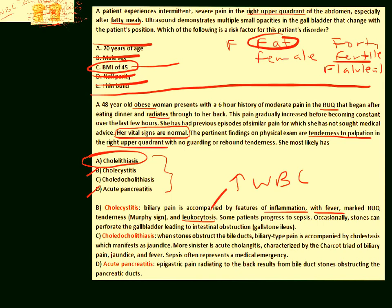To differentiate further: choledocholithiasis — stones in the common bile duct — is often associated with jaundice. Cholangitis involves inflammation of the entire biliary tree and presents with Charcot's triad: right upper quadrant pain, jaundice, and fever. Cholecystitis involves fever and leukocytosis. Pancreatitis is inflammation of the pancreas and more typically presents with epigastric pain — located more centrally rather than the right upper quadrant — and elevated amylase and lipase levels.